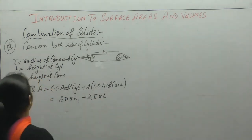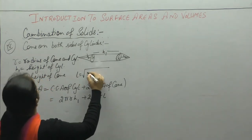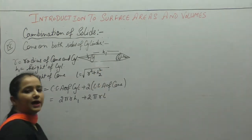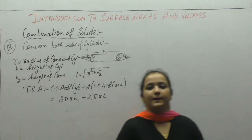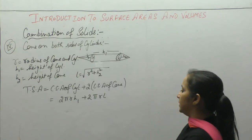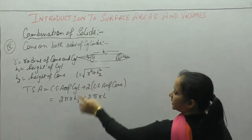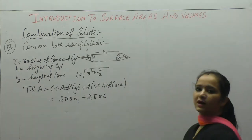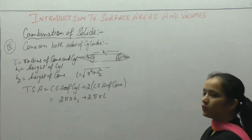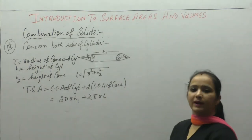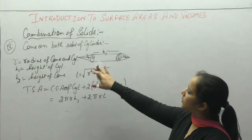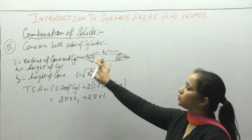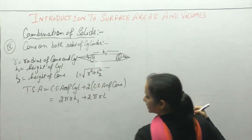Where l is equal to √(r² + h2²), since the cone's height is h2. So total surface area = 2πrh1 + 2 × curved surface area of cone. Now if we talk about volume, the total volume will be volume of cylinder plus 2 times volume of cones.